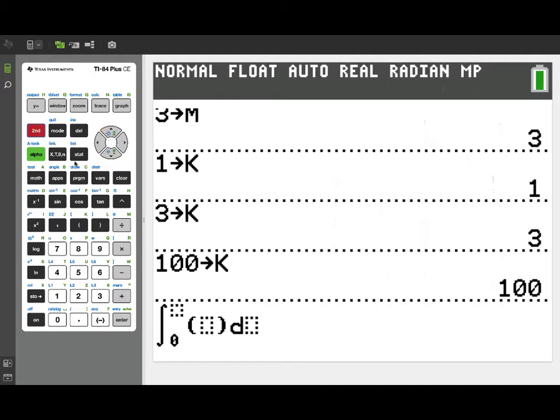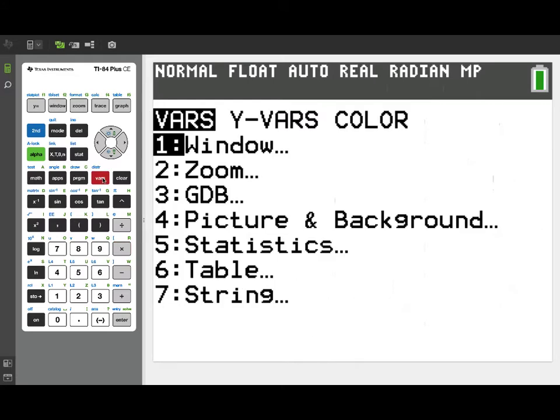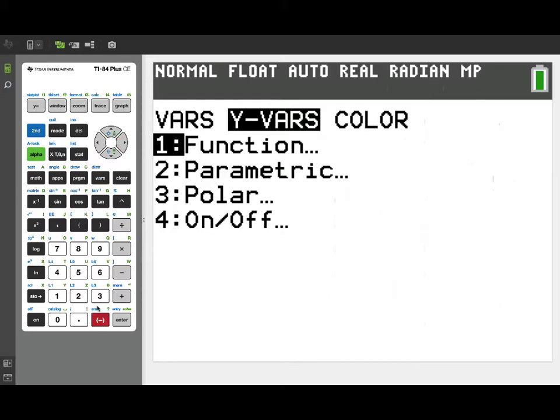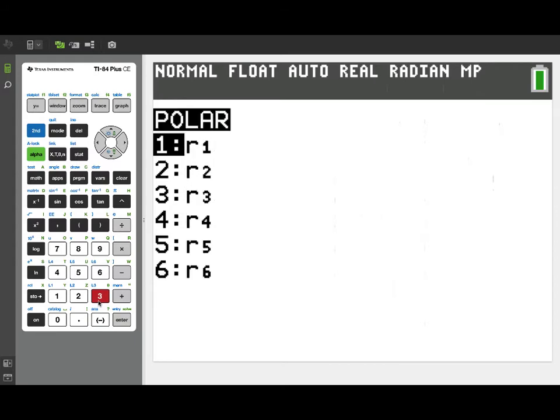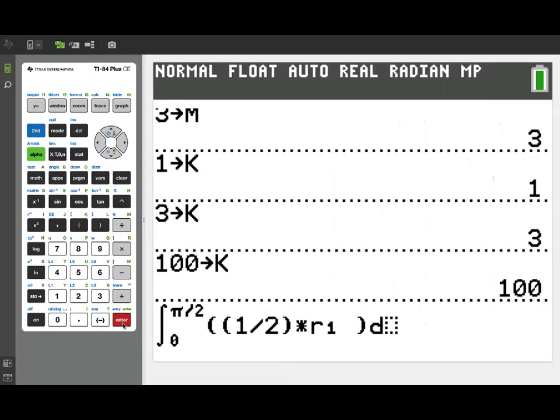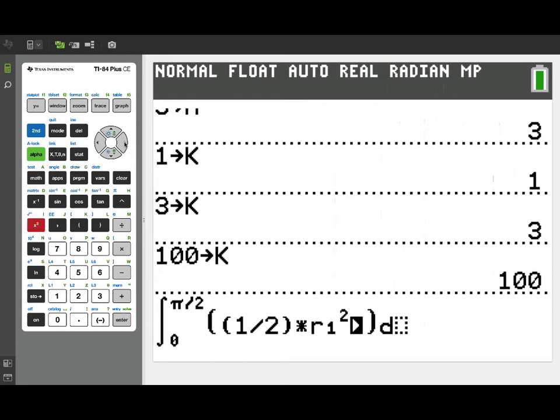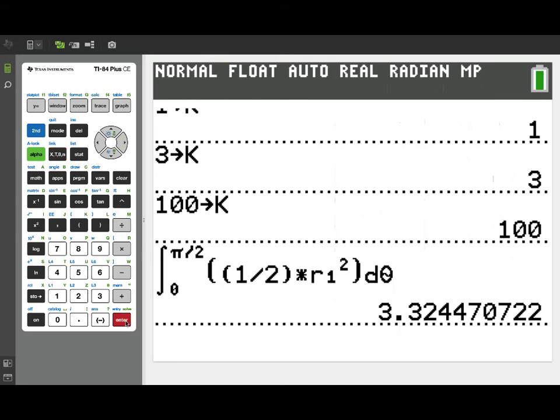So if we want that limiting area, we can just go back to the calculator screen. And we'll integrate from 0 to pi over 2. Since we're integrating for a polar area, we'll integrate 1 half times our polar function r1. So I go to y variables, pick up the polar r1, and remember that we need to square that. And then we'll integrate with respect to our independent variable theta, and we get a final answer of 3.32447, and so on.